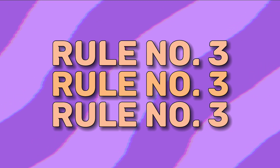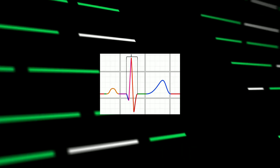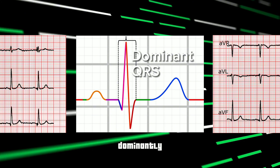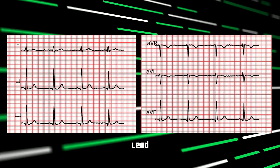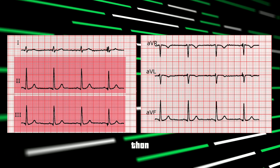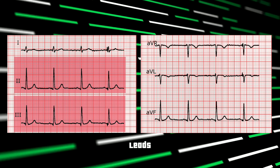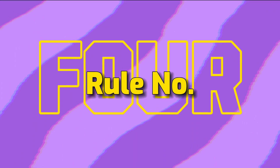Rule number 3: the QRS complex should be dominantly upward in leads 2 and 3 compared to other limb leads.